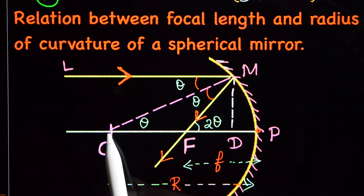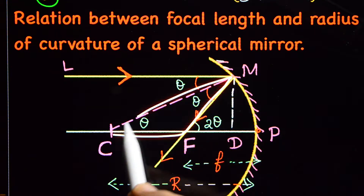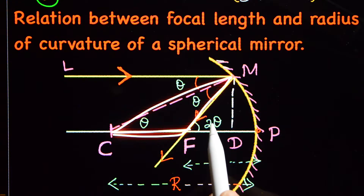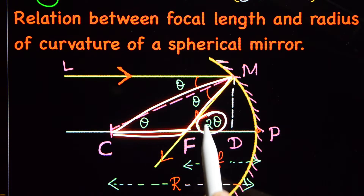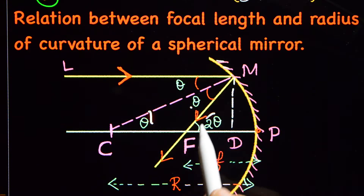Consider triangle CFM. The exterior angle is equal to the sum of the opposite interior angles.